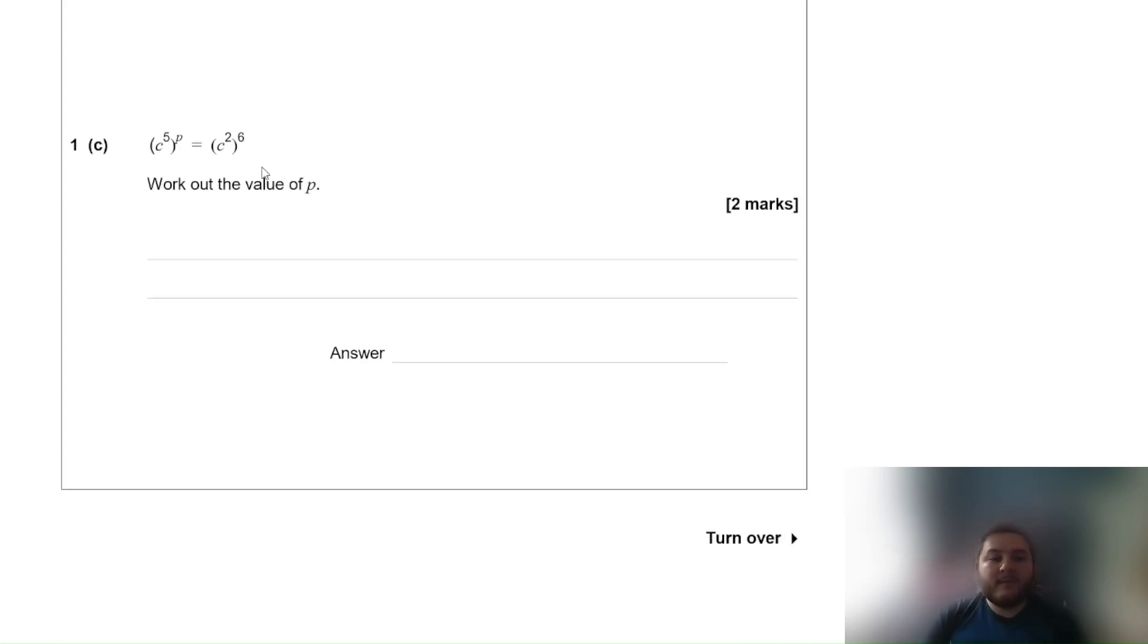And finally when you have a base number to a power in brackets raised to a power you multiply the powers. So this means c to the power of 5p is equal to c to the power of 12. Because we've got the same base number raised to the same power, this means that 5p is equal to 12. So p is equal to 12 over 5 which is 2.4 as a decimal. Very interesting question there for the start. You just have to be good at your laws of indices.